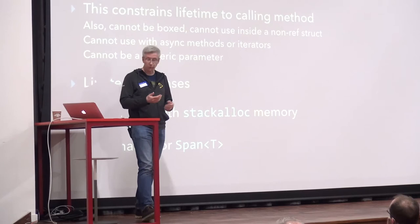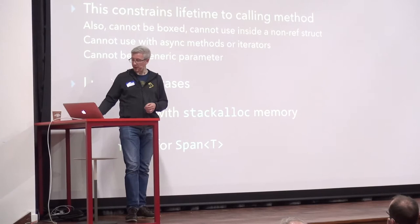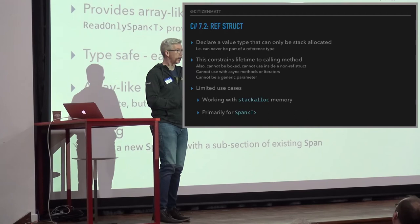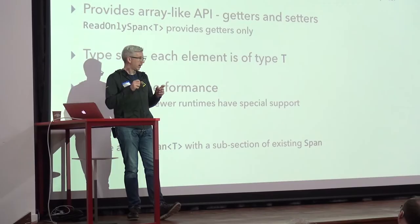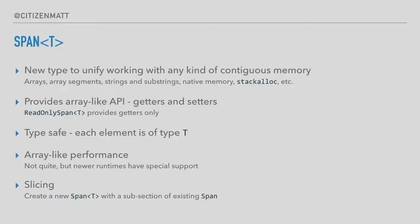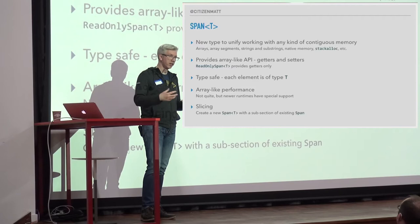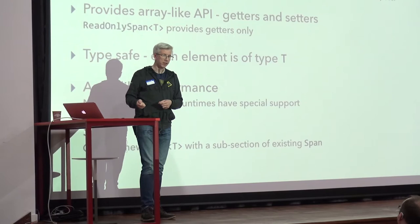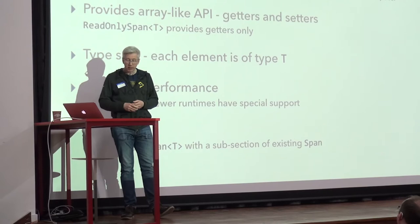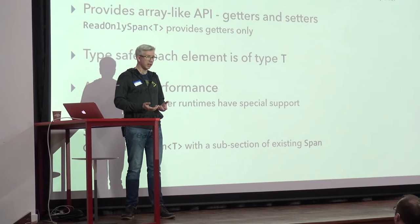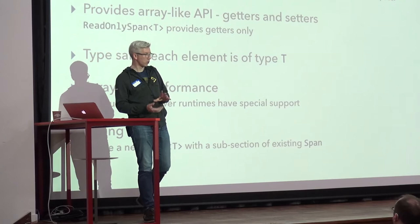Span<T> is going to be the next big thing — really useful, going to make lots of changes in how we write software. It's a new type that unifies working with blocks of memory. As long as the memory is in one contiguous block, you can use Span<T> with it — it doesn't matter whether it's an array, string data, native memory, or stackalloc memory. You get the same API for all of them: wrap it in a span, and the span gives you array-like access with getters and setters. It's type-safe: each element in the pseudo-array is of type T.